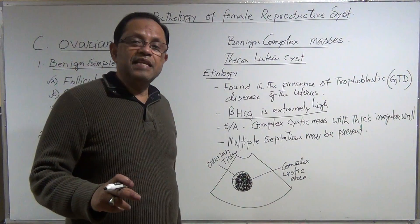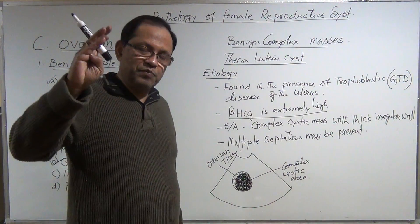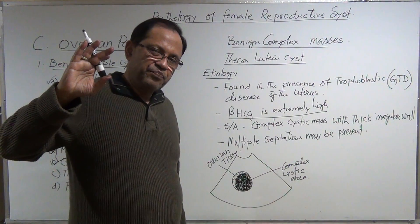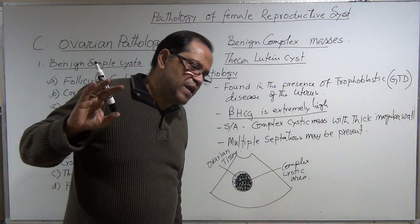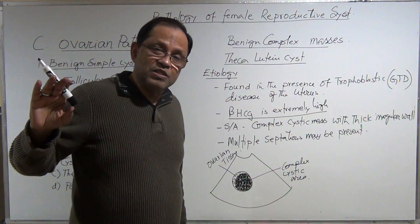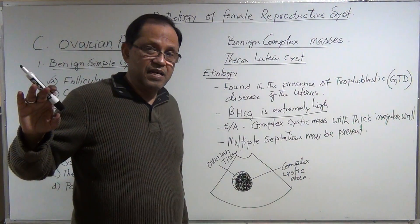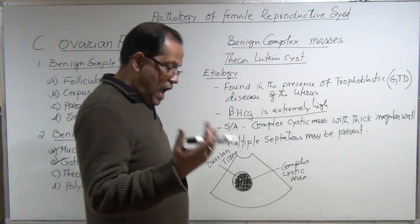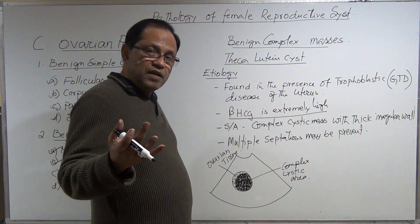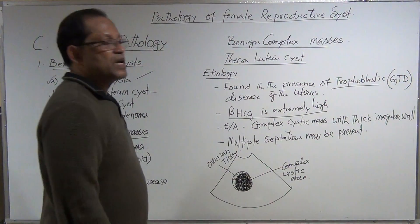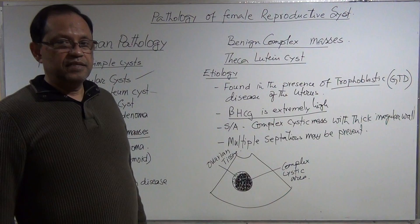If you see the beta hCG level is high, consider a couple of things. Pregnancy test is positive—how many gestations, how many pregnancies are there? It could be multiple because the beta hCG is high, or it could be hyper-stimulated, or it could be molar pregnancy, gestational trophoblastic disease.